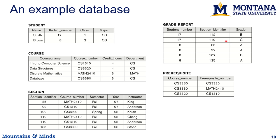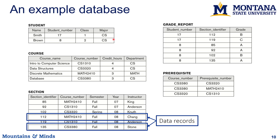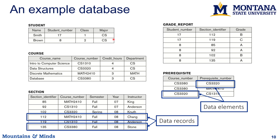A relational database contains a number of relations, which are basically tables of data — that's why it's called relational. In a relation or table we have metadata describing what's in the table, and data stored in columns, with different elements represented in each row. Those rows are also called data records, and the different elements of rows are called data elements. Each data element might be stored with some type, just like in C++ — it might be an integer or a string, also called a variable character with some maximum length.